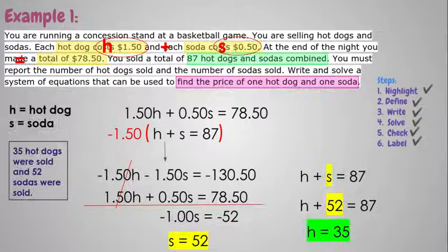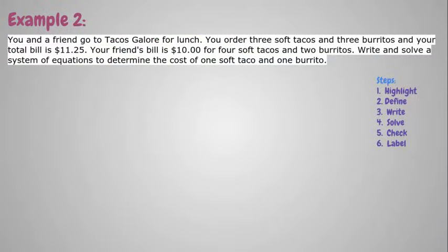Example two says you and a friend go to Tacos Galore for lunch. You order three soft tacos and three burritos, and your total bill is $11.25. Your friend's bill is $10.00 for four soft tacos and two burritos. Write and solve a system of equations to determine the cost of one soft taco and one burrito. Okay, so this is the second type of problem they give us. I find these ones a little bit easier because the equations are actually embedded in the problem. It's often comparing two different people's prices for something, whether it be lunch at a fast food place or at the grocery store, and you have to find the price of one of each. So we highlighted. Defining, we know we're looking for the cost of one soft taco and one burrito.